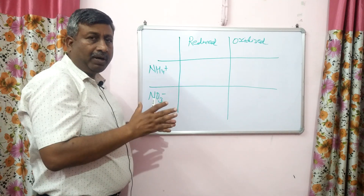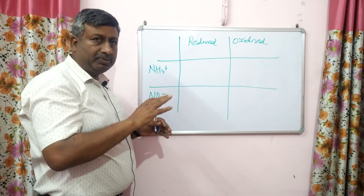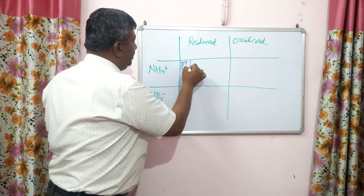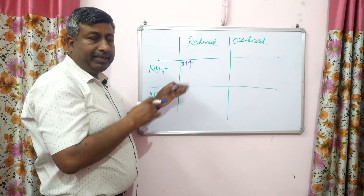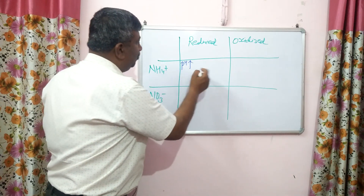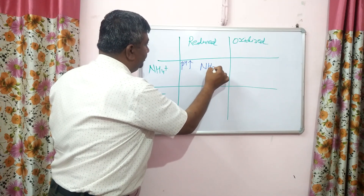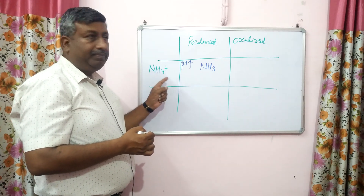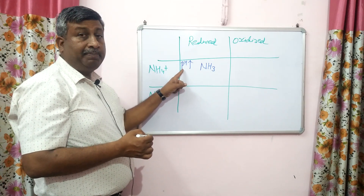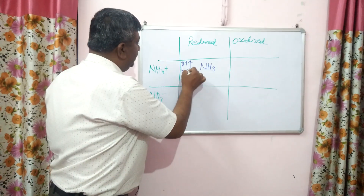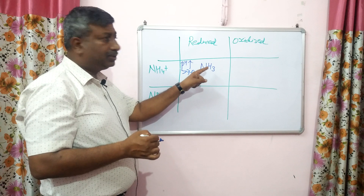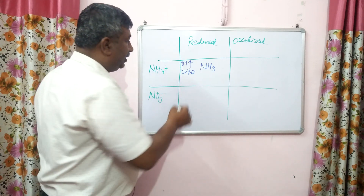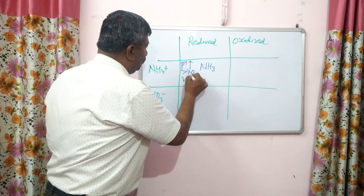Suppose the situation is reduced — heavy rainfall or heavy irrigation, all pores have water. Then, if soil pH is high (alkaline, more than 7), moisture is present, and temperature is high, then ammonium is converted into ammonia gas. The ammonium ions present in soil, under alkaline pH greater than 7, are converted into ammonia gas and escape into the atmosphere. This process is known as volatilization.